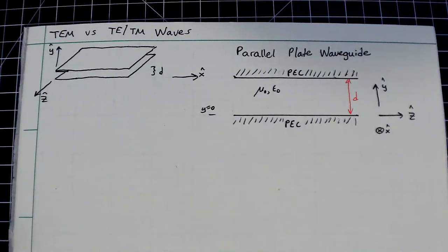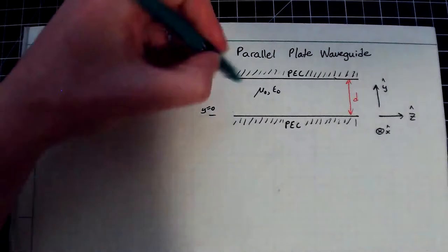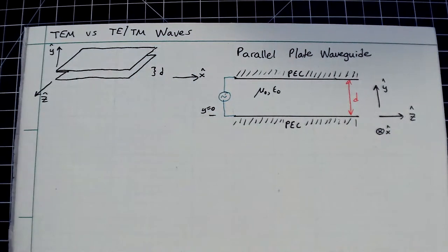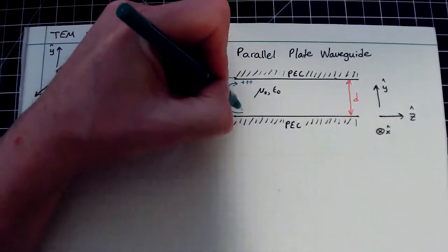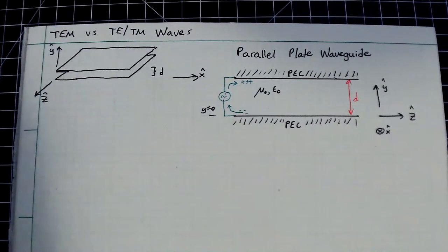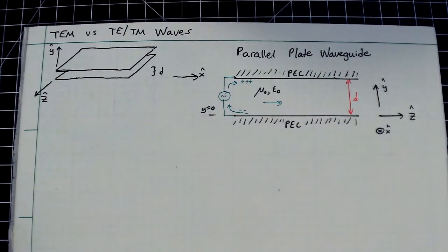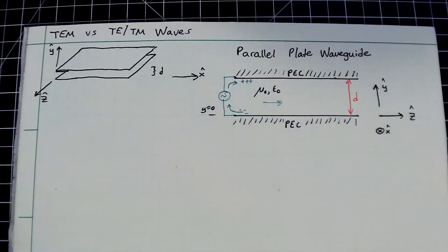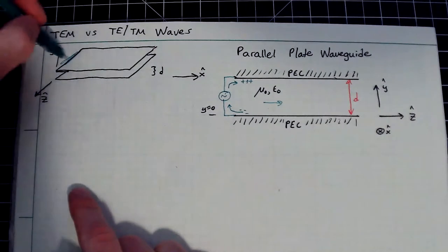There are two ways to excite a waveguide like this. For the first example, imagine taking a voltage source and touching it to the top and bottom plates. This will pull charge — depositing positive charge on top and leaving negative charge on the bottom — and that separation of charge will propagate down the waveguide at some phase velocity.